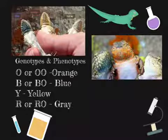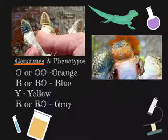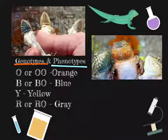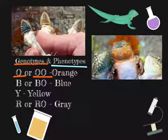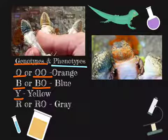Before we create a Punnett square for these lizards, we're going to go over the genotypes and the phenotypes for them. So first, the genotypes are O or OO, B or BO, Y which is only Y, and R and RO.